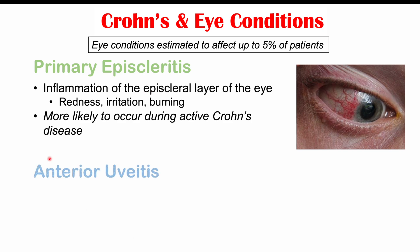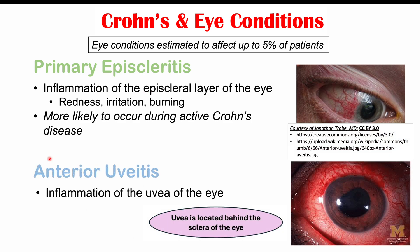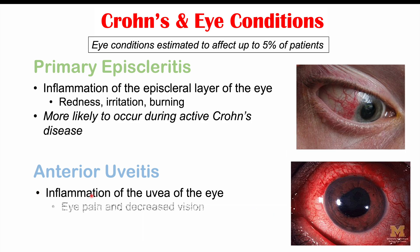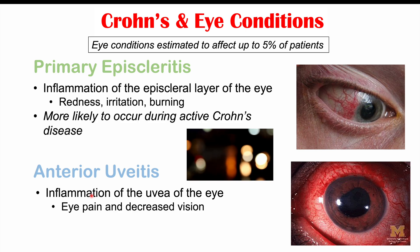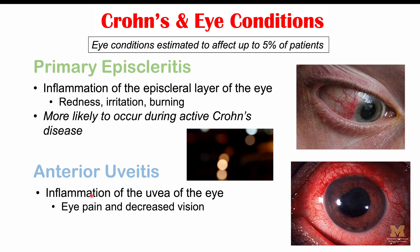We can also see anterior uveitis occurring in Crohn's disease. Anterior uveitis is inflammation of the uvea of the eye. This is going to cause eye pain and decreased vision. There are important differences in signs and symptoms between both of these eye conditions.